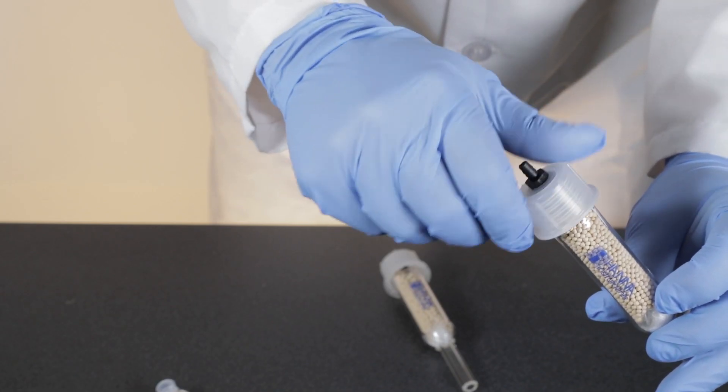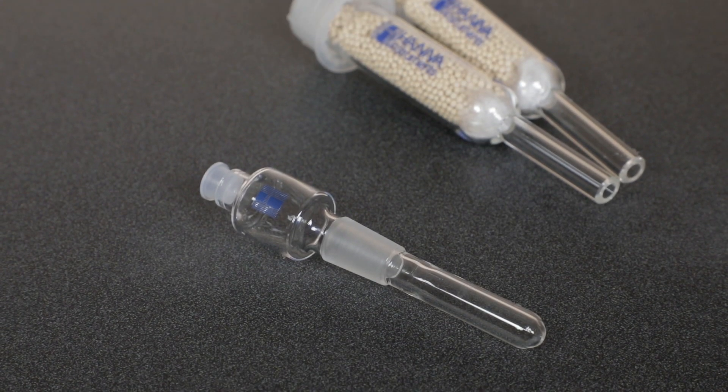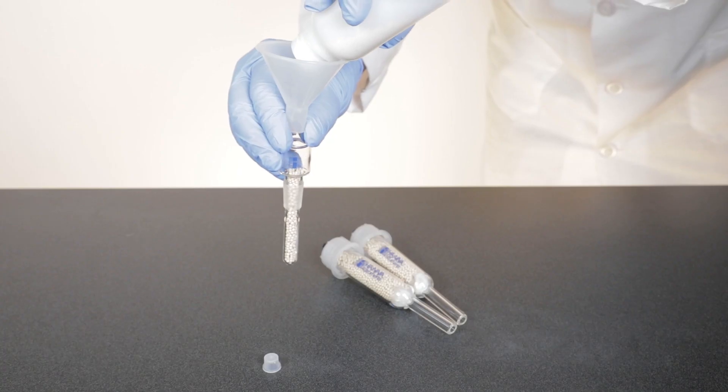After filling the cartridge, screw the cap back on firmly and make sure that no sieves have lodged in the threading of the cap. Fill the ground glass desiccant tube as well and replace the plastic cap when done.